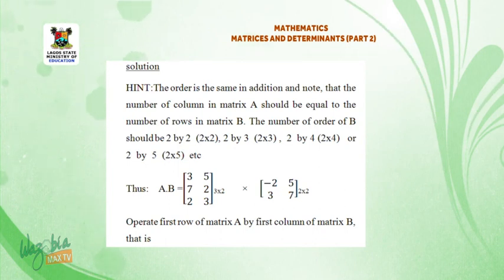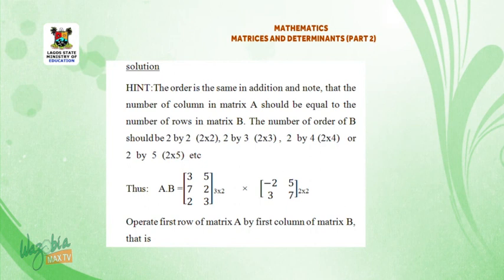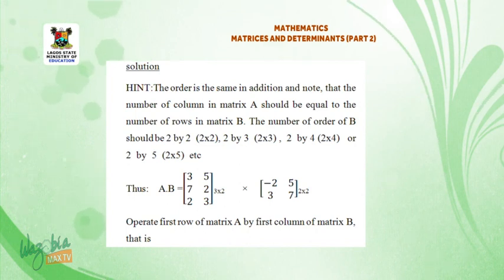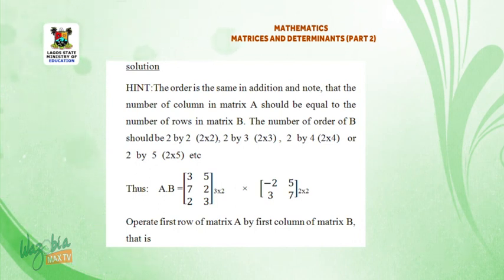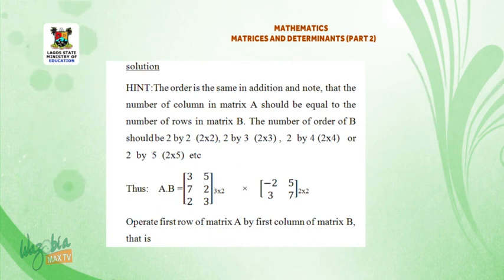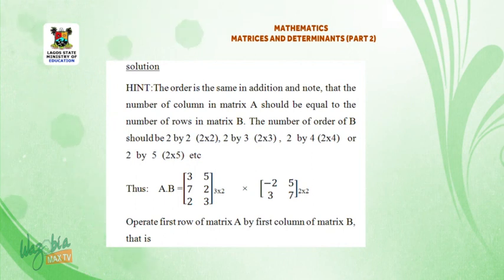The number of rows in matrix B should be 2, so the order of B could be 2×2, 2×3, 2×4, 2×5, etc. Thus A·B equals the matrix: [3, 5, 7, 2, 2, 3] dot the matrix [minus 2, 5, 3, 7]. Operate first row of matrix A by first column of matrix B.